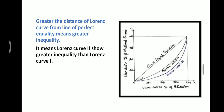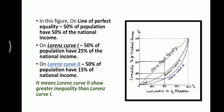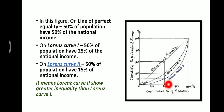In this figure, on the line of perfect equality, 50% of the population have 50% of the national income — that is perfectly equal. In Lorenz curve one, 50% of the population have more share of national income, while in Lorenz curve two, 50% of the population have only 15% of the national income, meaning Lorenz curve two shows greater inequality than Lorenz curve one.